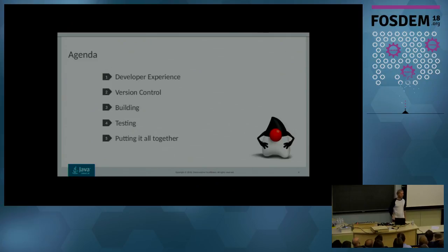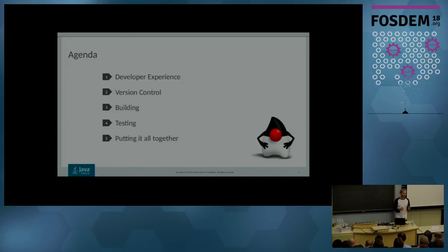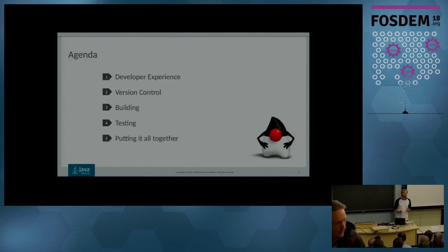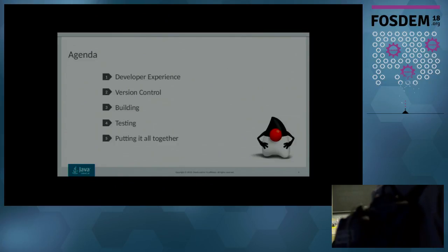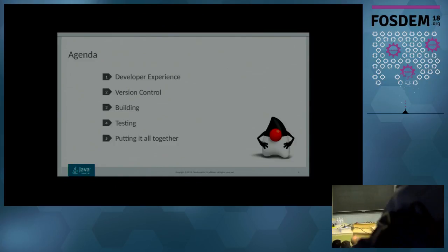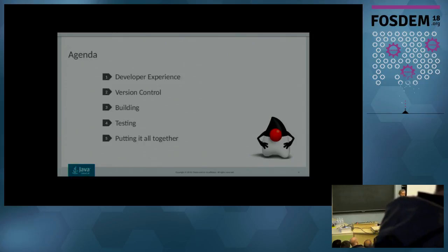In the end of the day, we're going to talk about what is the developer experience and what does it mean. We're going to look at three different categories of tools related to developer experience: production control, building, testing, and then how you can put it all together into one workflow when working on OpenJDK.